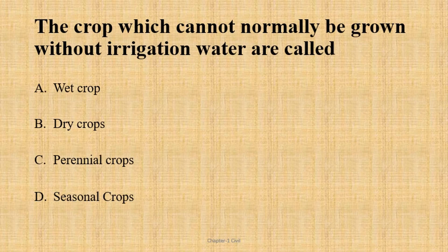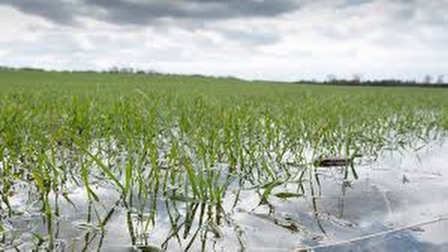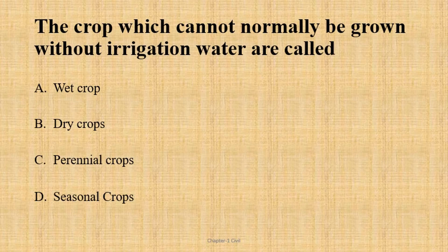The question is about the irrigation subject. The crop which cannot normally be grown without irrigation water is called a wet crop. The answer is wet crop — it is an artificially irrigated crop.